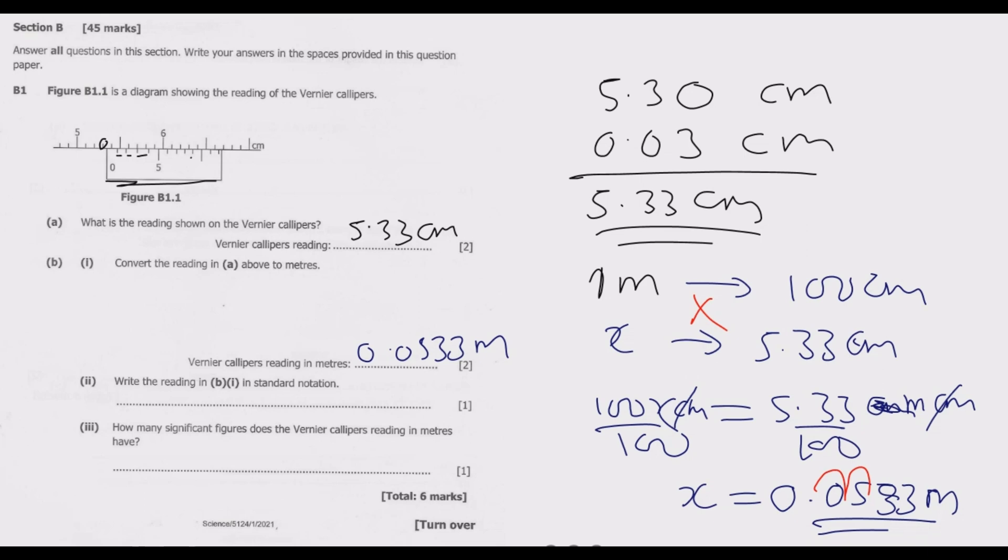We have one, two, so two decimal places to the right. So we end up with 5.33 multiplied by 10 to the power negative 2, because the decimal place has moved down two places.